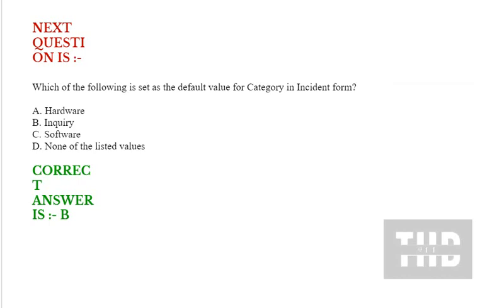Next question: Which of the following is set as the default value for category in the incident form? Option A: Hardware. Option B: Inquiry. Option C: Software. Option D: None of the listed values. Correct answer is Option B.